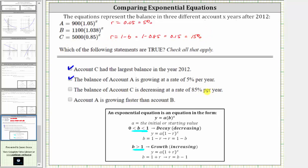This statement is false. And then the last statement is, account A is growing faster than account B.